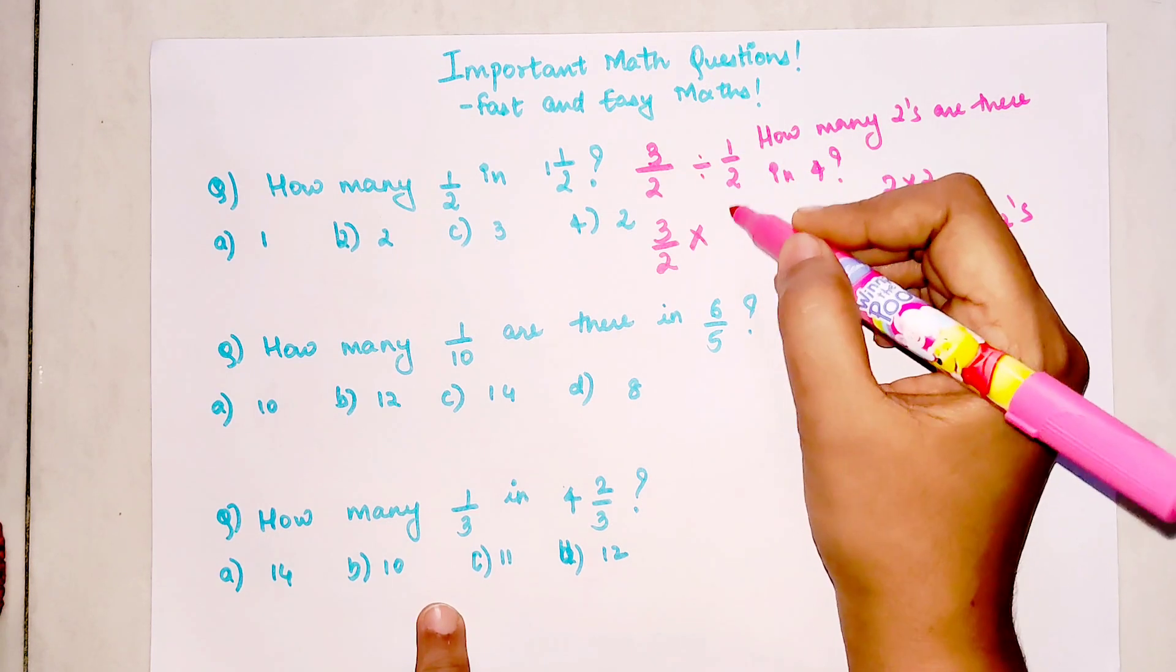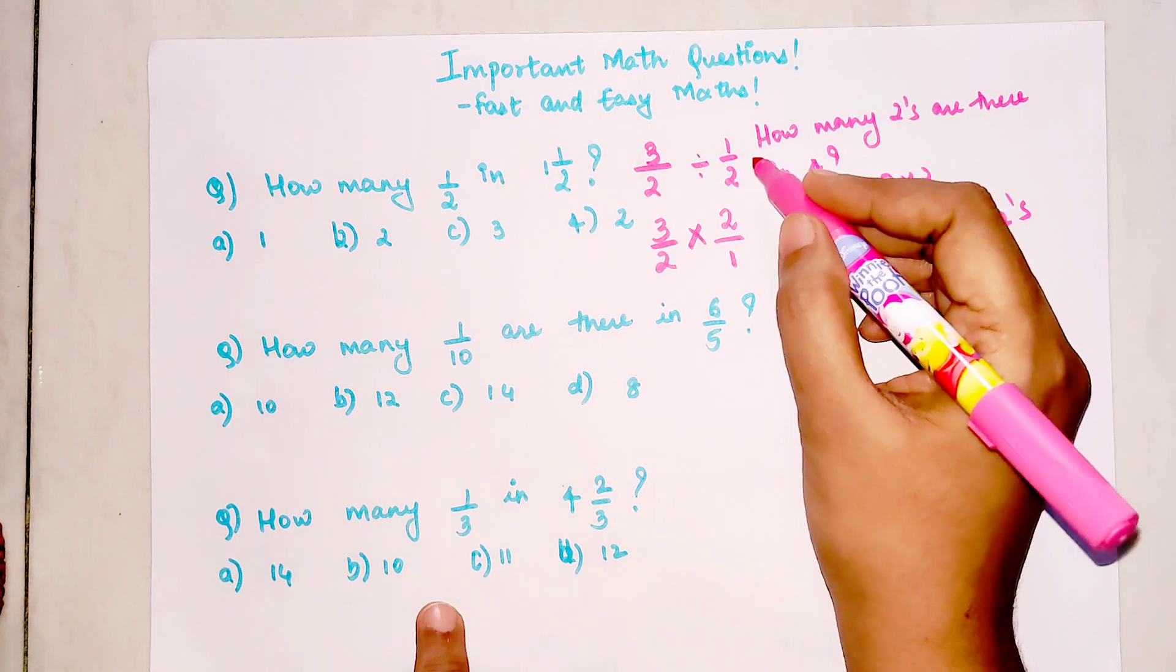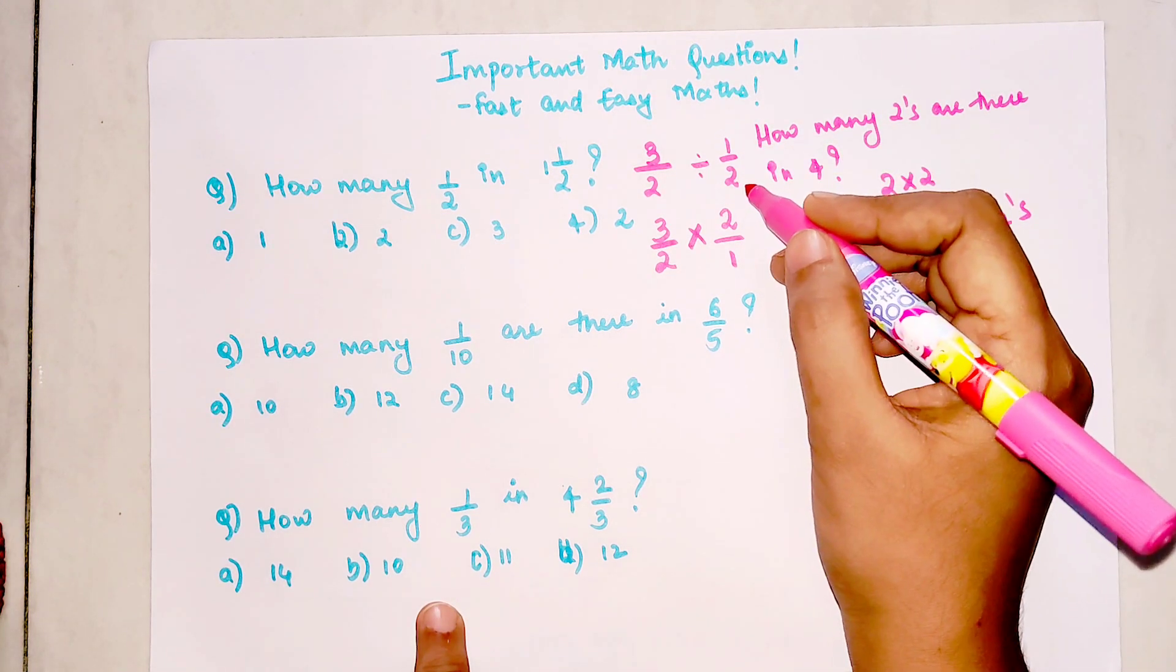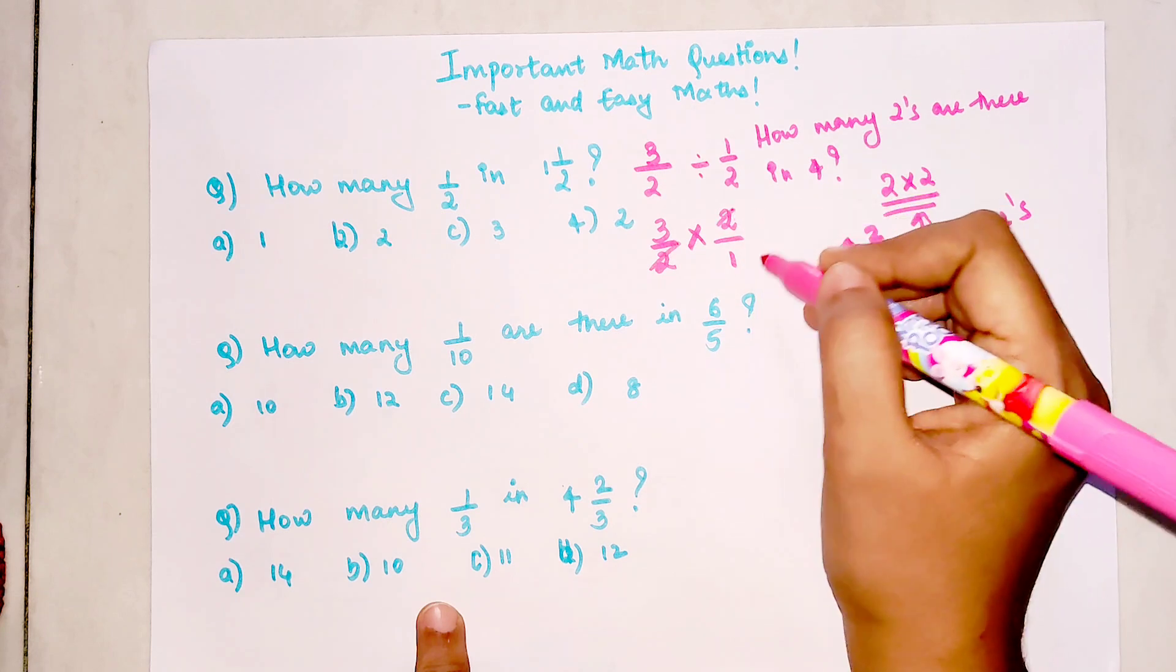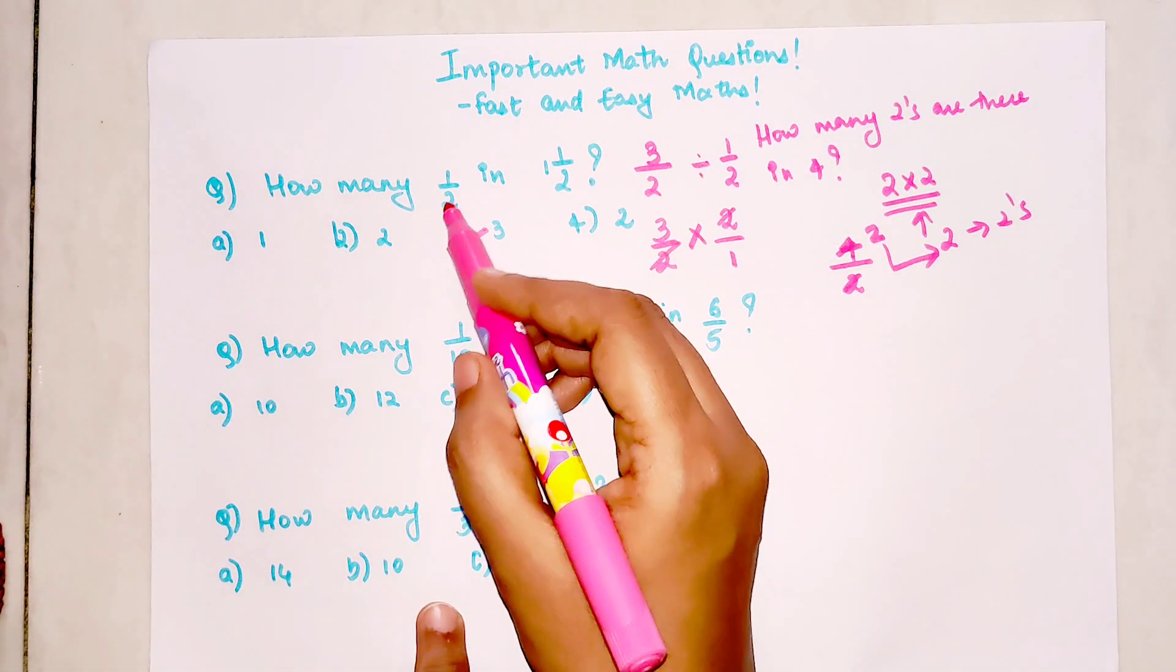The second fraction becomes reciprocal—the denominator becomes the numerator and the numerator becomes the denominator. These are getting cancelled, so 3/1. The final answer is there are three halves in 1 and 1/2.